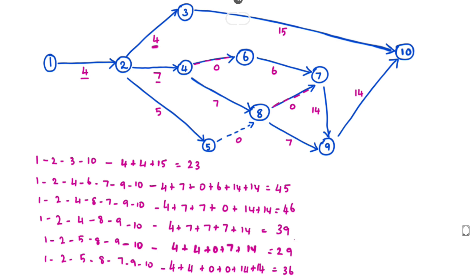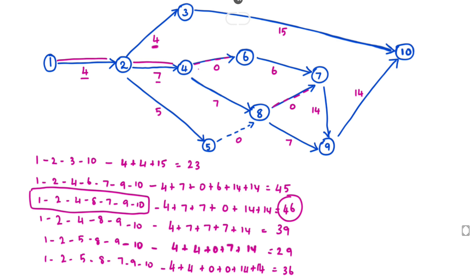The path containing the maximum duration is called the critical path. The maximum duration is 46, so the critical path will be 1-2-4-6-7-9-10. Now we draw a double line: 1 to 2, then 2 to 4, then 4 to 6, then 6 to 7, then 7 to 9, then 9 to 10. This is the method we use to solve the problem. We will see more in the next video. Thank you.